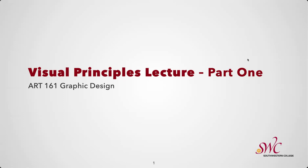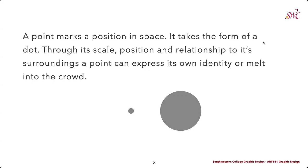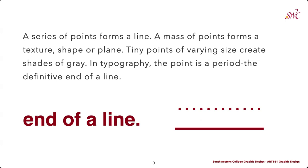To start, we need to talk about points, lines, and planes. Everything we design is comprised of some combination of these elements. If we break it down to its simplest forms, even more organic shapes typically can be identified through these basic shapes as well. When we talk about points, we're talking about a position in space, and it takes the form of a dot. Through scale, positioning, and the relationships to the surrounding elements, a point can express its own identity, or it can tend to melt into the crowd.